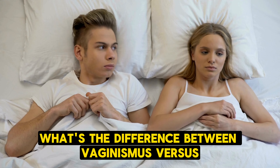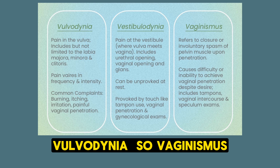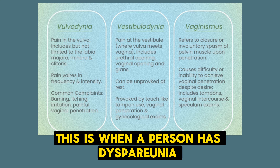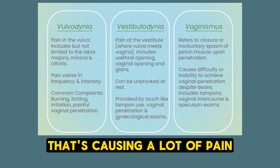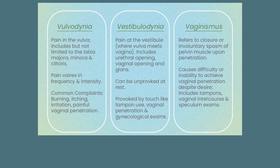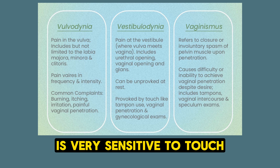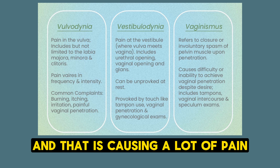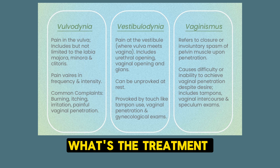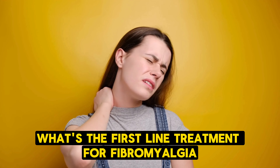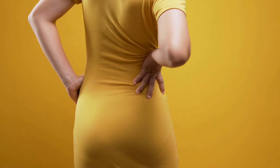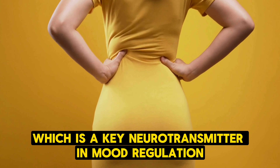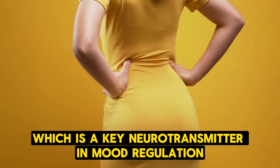Vaginismus is dyspareunia with pain upon superficial vaginal entry due to vaginal wall spasm. Vulvodynia is when the vulva is very sensitive to touch, causing pain. Treatment for both is physical therapy. First-line treatment for fibromyalgia is SNRI — such as duloxetine, which blocks reuptake of serotonin and norepinephrine. Fibromyalgia involves trigger points and is associated with stress.